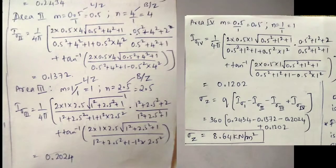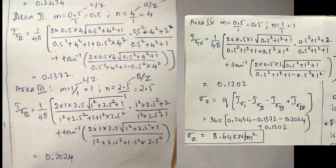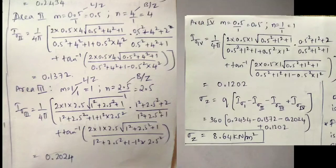Finally, substituting all values: σz equals 360 × (0.2434 − 0.1372 − 0.2024 + 0.1202), giving σz equal to 8.64 kN/m².